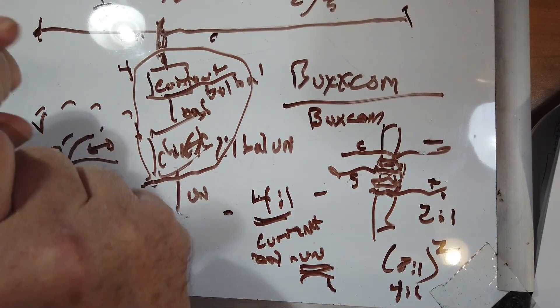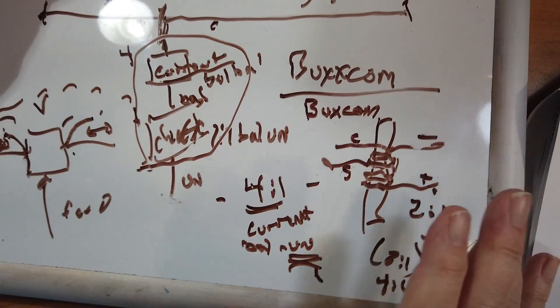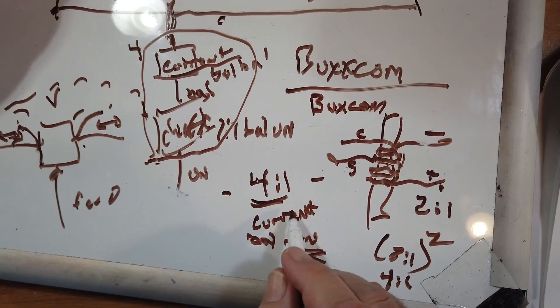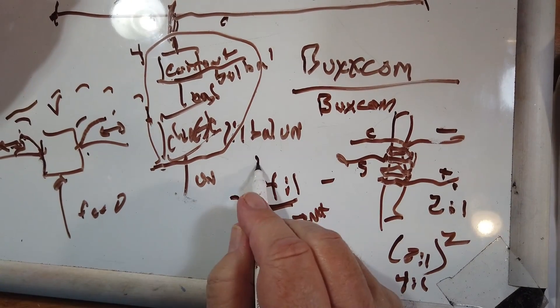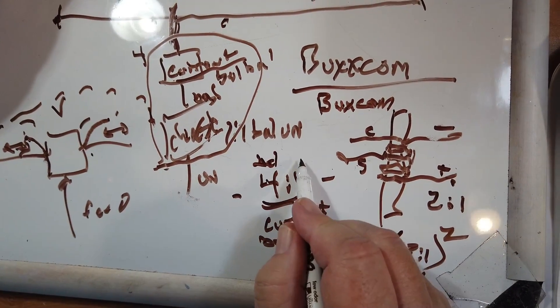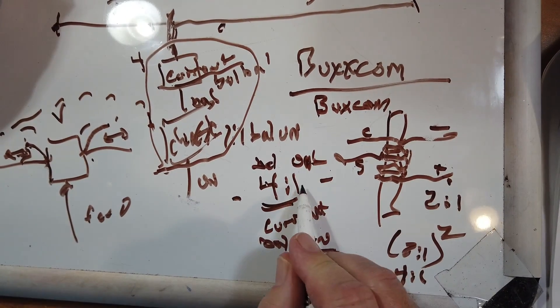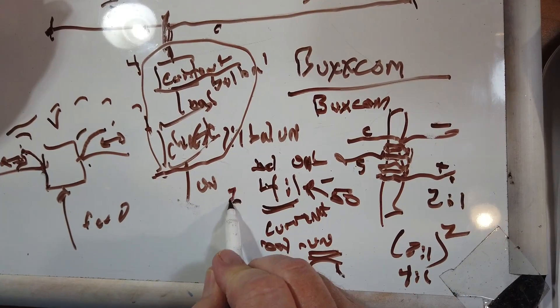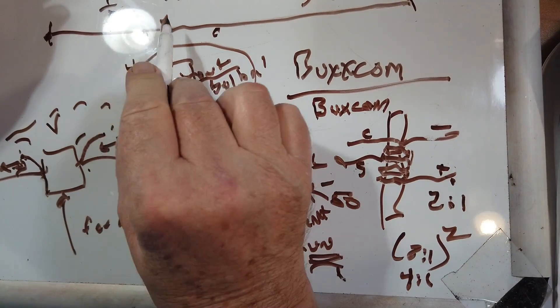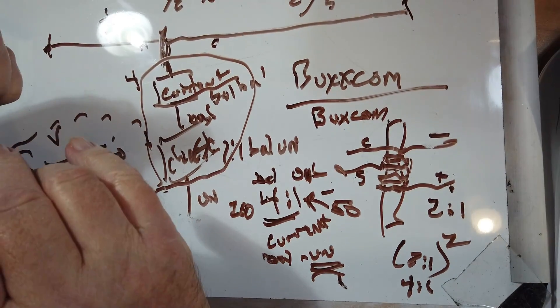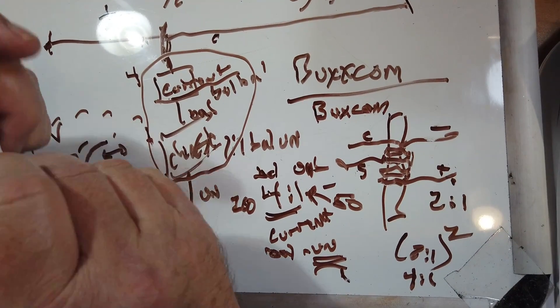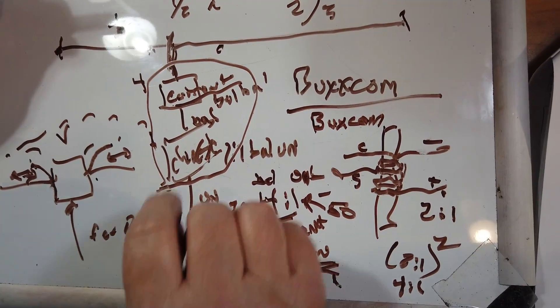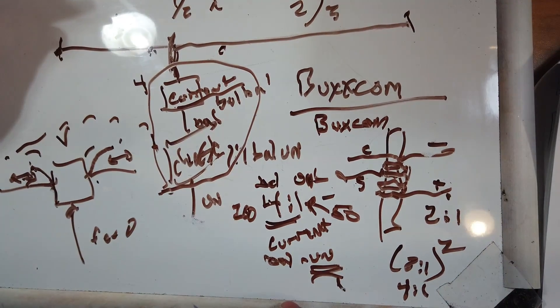So I would suggest if you have no other information available, look for a four-to-one current balun with the four being the balanced side and the one being the unbalanced. And then you will feed this with 50 ohms. This over here will become 200 ohms, which might be about the right for feeding this thing a little off center. You would not use a four-to-one balun to feed it in the center or at the end, but somewhere in between there.